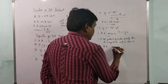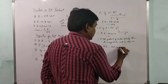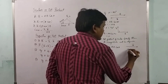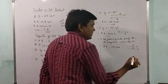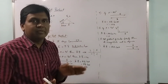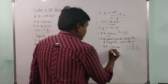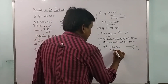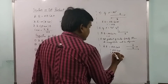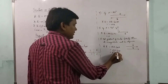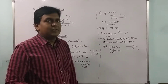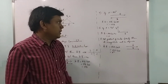Let us consider a-bar dot a-bar. Since it is the same vector, both copies have the same direction, so the angle between them is zero. We get a·a·cos(0) equals a·a·1 equals a². So the dot product of a vector with itself equals the square of its magnitude.